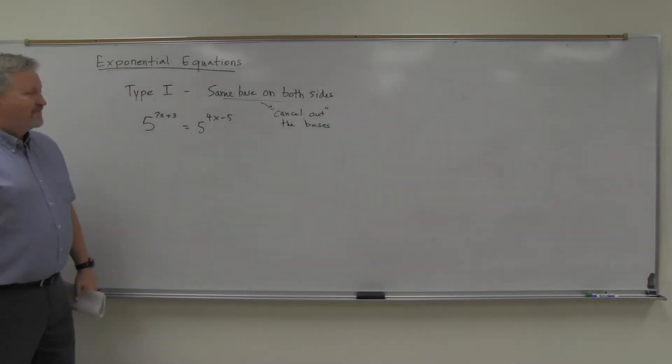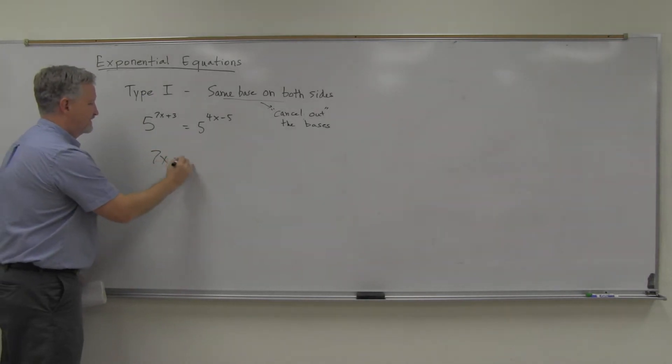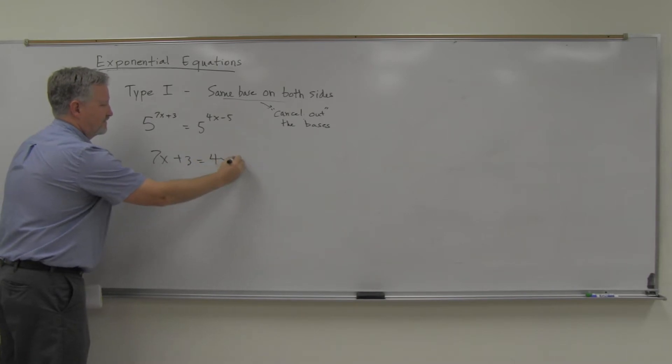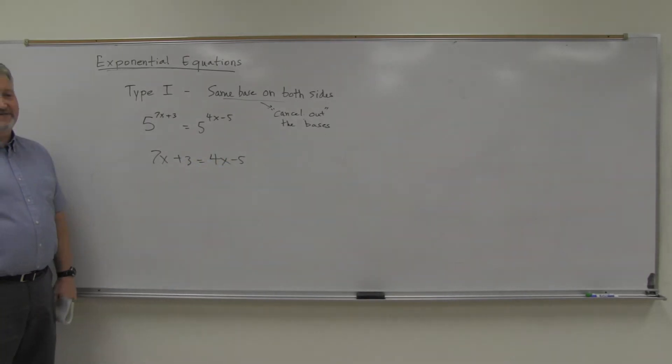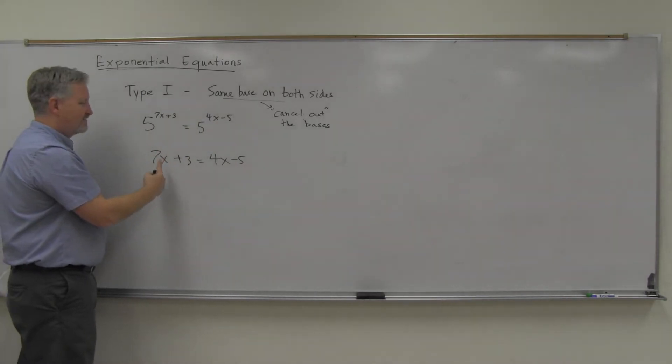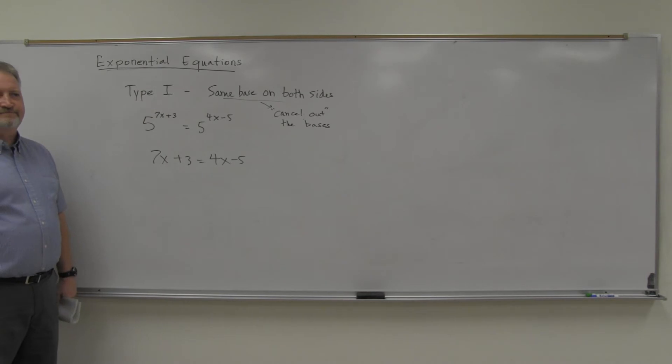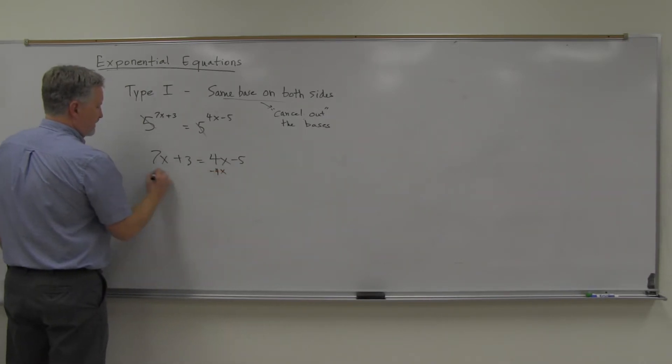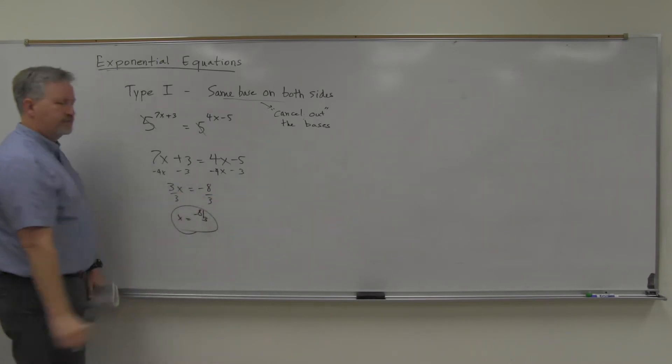When you have the same base on both sides, you can cancel out the bases. The bases go away, basically. It only works if you have the same base on both sides. Those bases just cancel out, so that just leaves you the exponents equaling one another. If you've thought about it, that probably makes sense. For this side to equal that side, that's what's going to happen, right? You've got to have 7x plus 3 equals 4x minus 5. So the bases cancel out. And that's what makes these nice, because then you usually just have a simple equation. Subtract 4x, subtract 3, 3x equals negative 8, divide by 3, you've got x is negative 8 thirds.